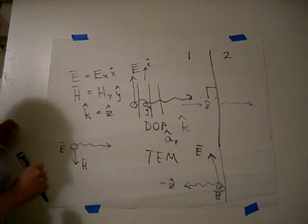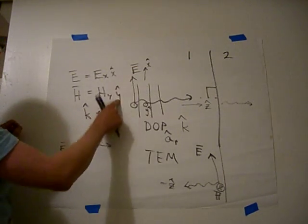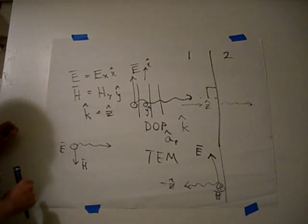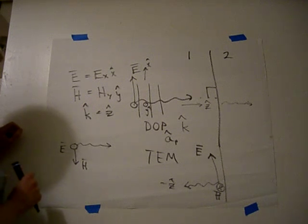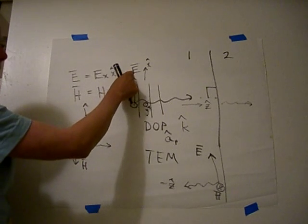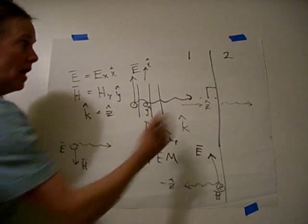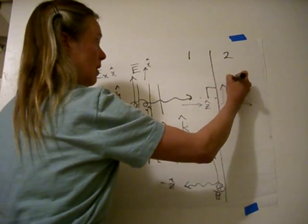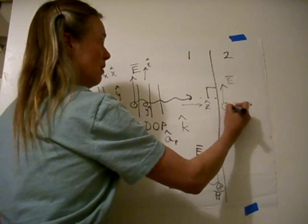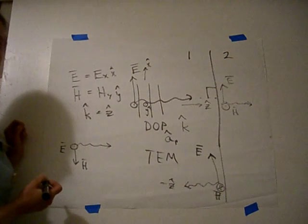When we're doing this analysis, there are some important things that we're going to be looking at. One of them is the polarization and direction of propagation, the vectors that are involved in this problem. Another one are the various magnitudes. We need to know the magnitude of E and H, E and H, also an E and H term here. We need to know all of those magnitudes.